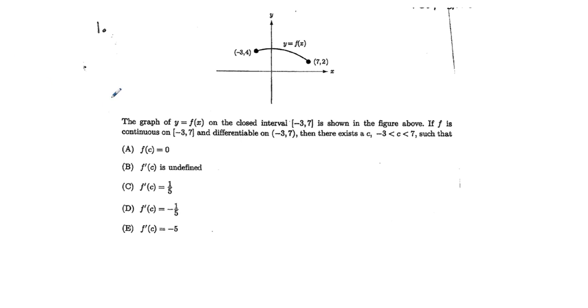Here we have problem 1. The graph of y equals f of x on a closed interval from negative 3 to 7 is shown in the figure above. If f is continuous on the interval negative 3 to 7 and differentiable on negative 3 to 7, then there exists a c between negative 3 and 7 such that, and this is what we call the mean value theorem.